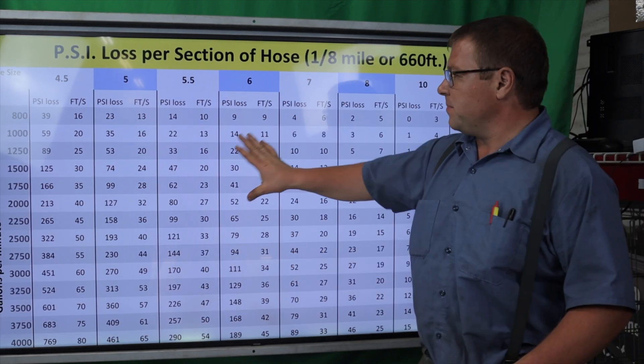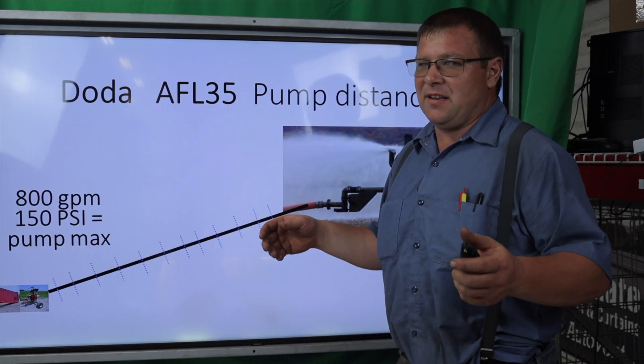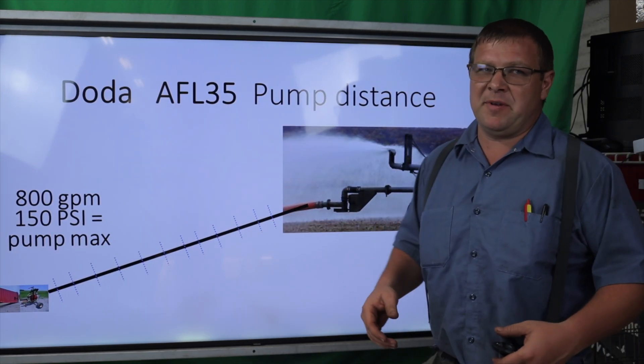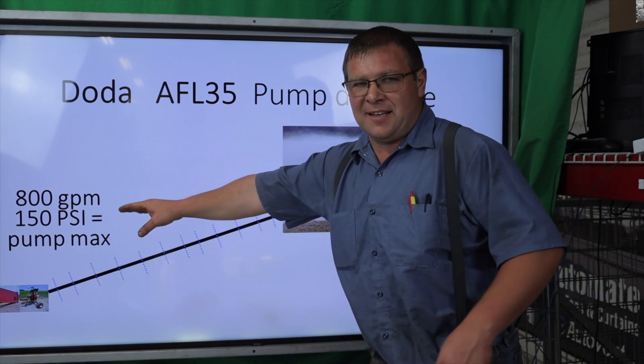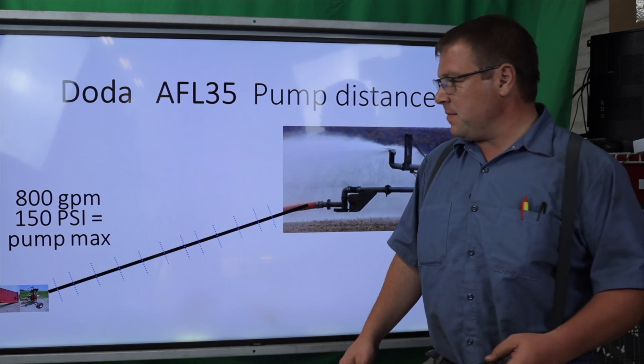First step is the PSI loss chart and determining what your pump can produce. How many gallons per minute at what PSI? This particular pump does 800 gallons per minute at 150 PSI.